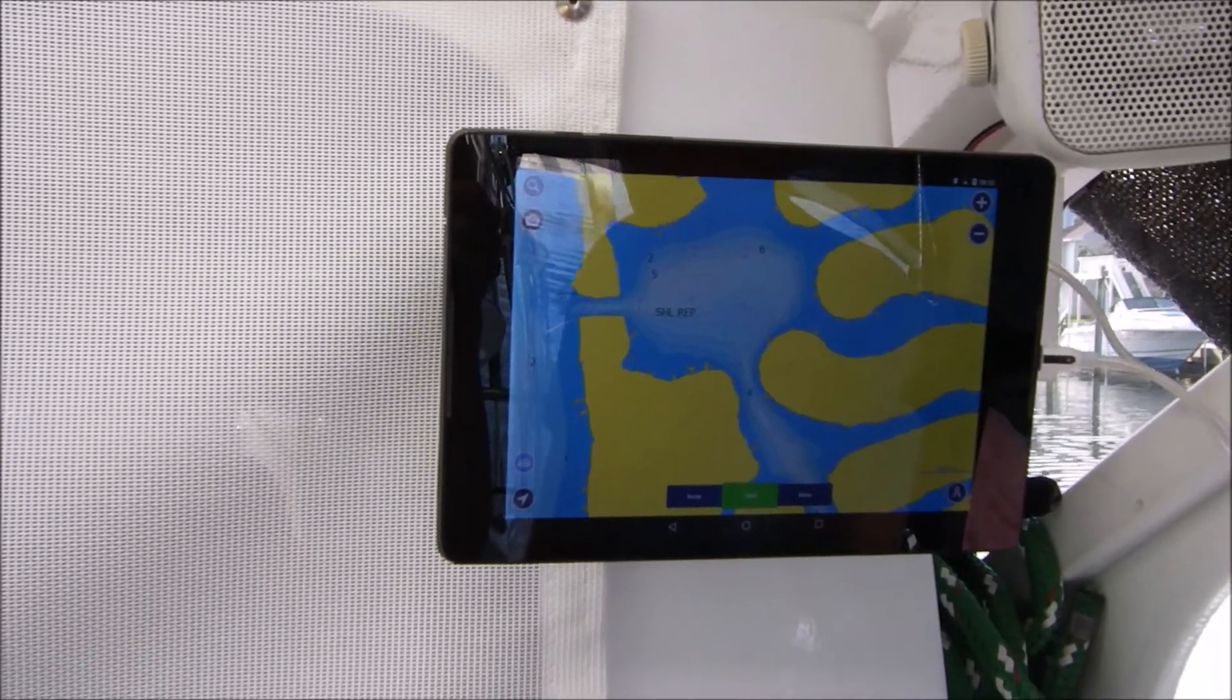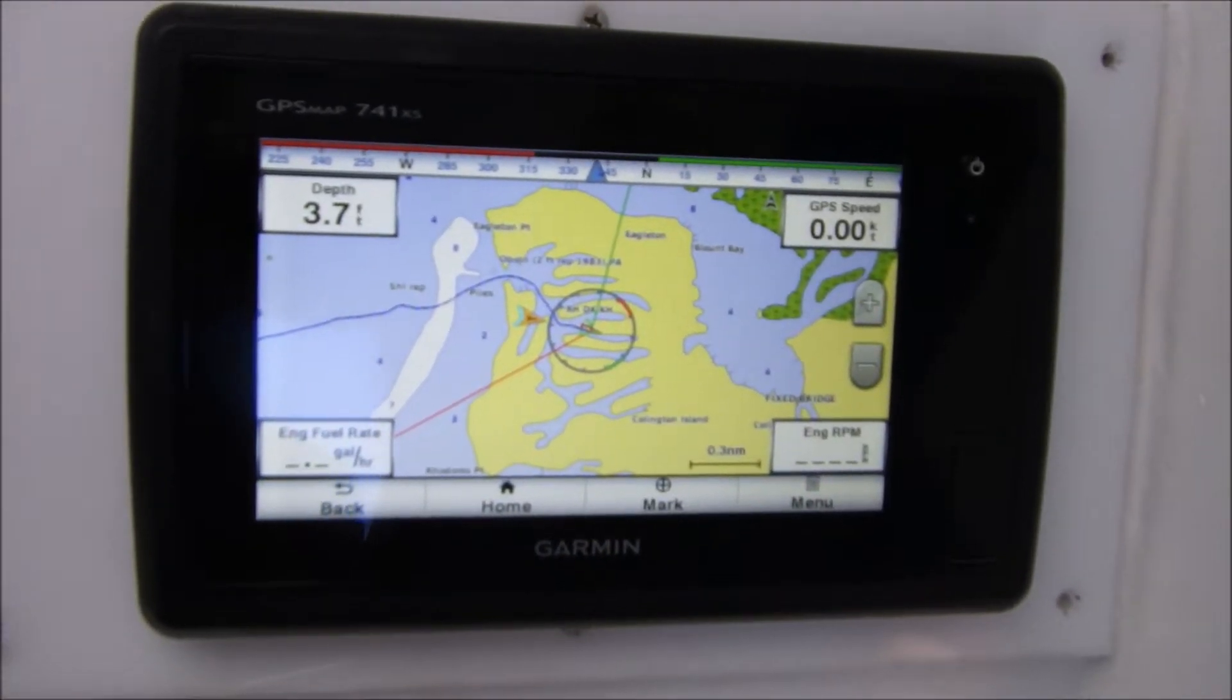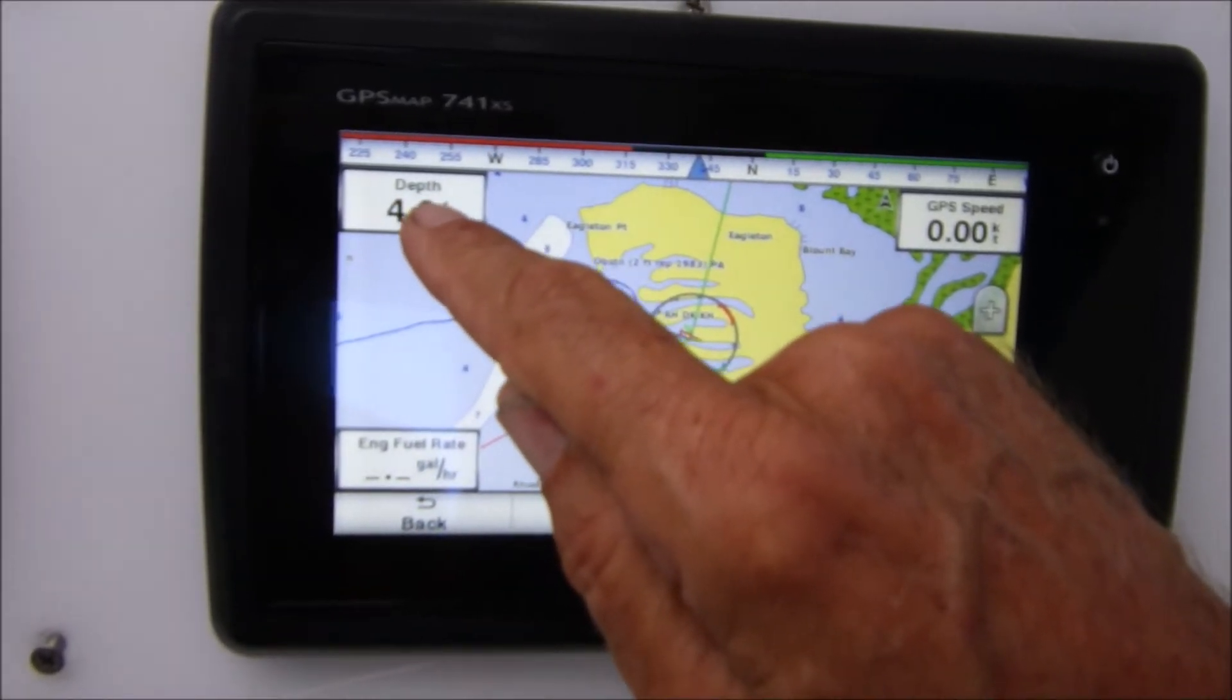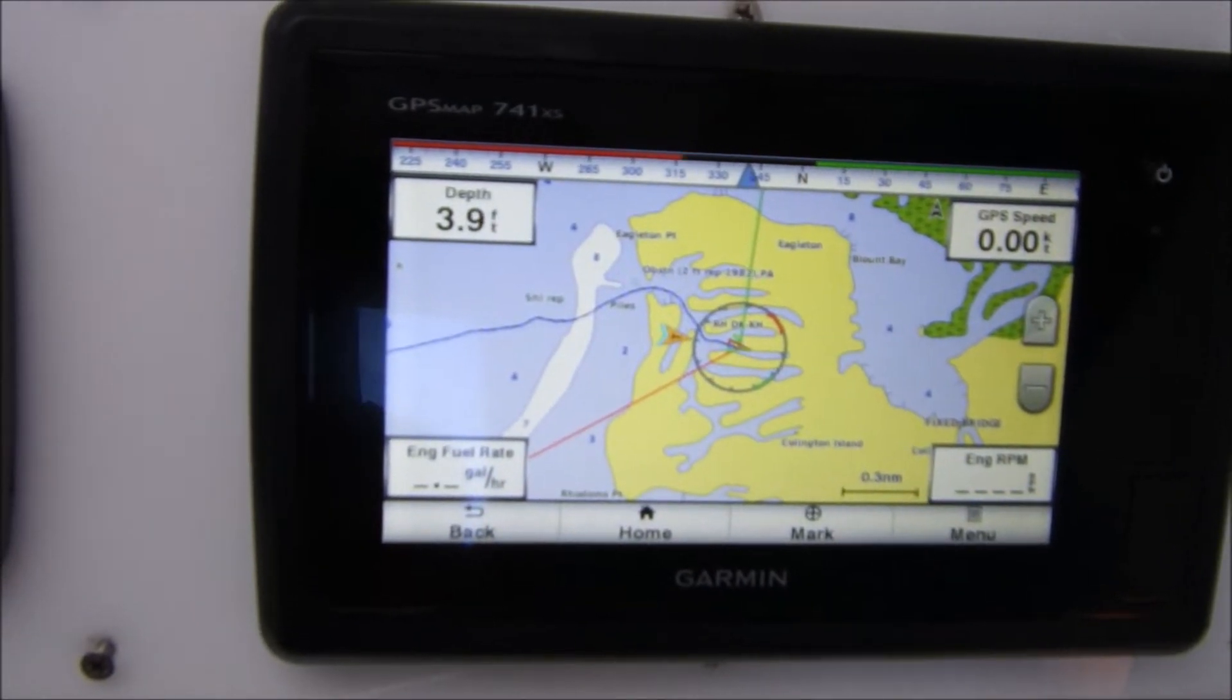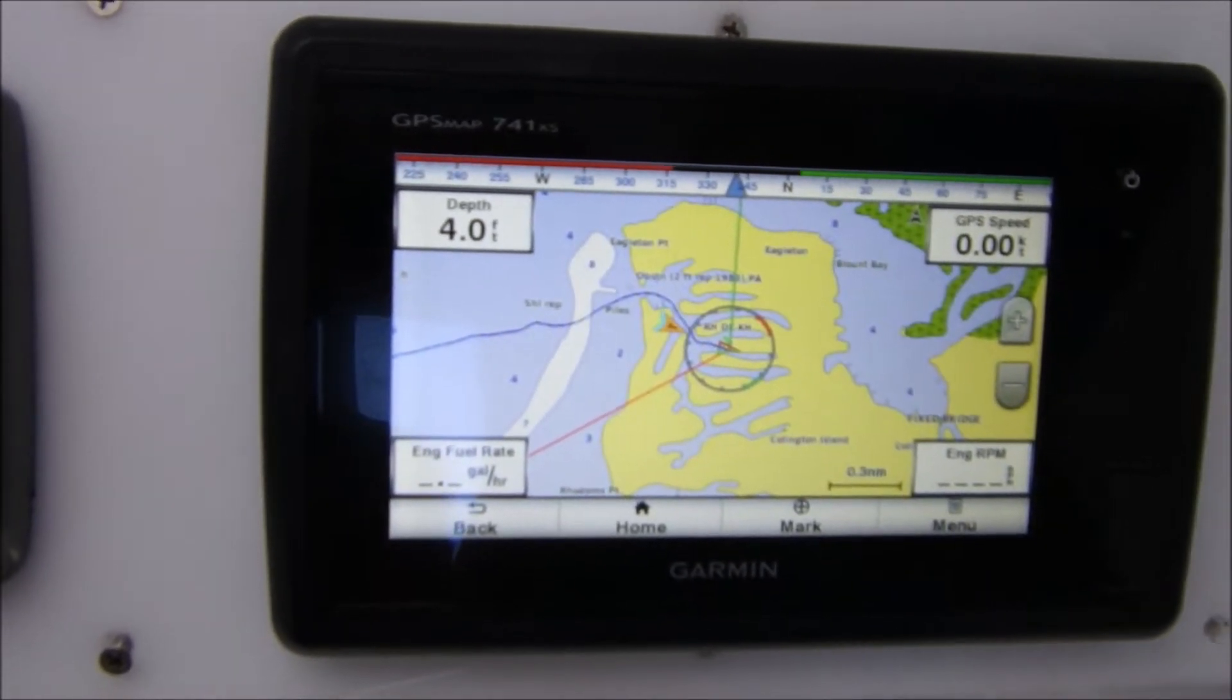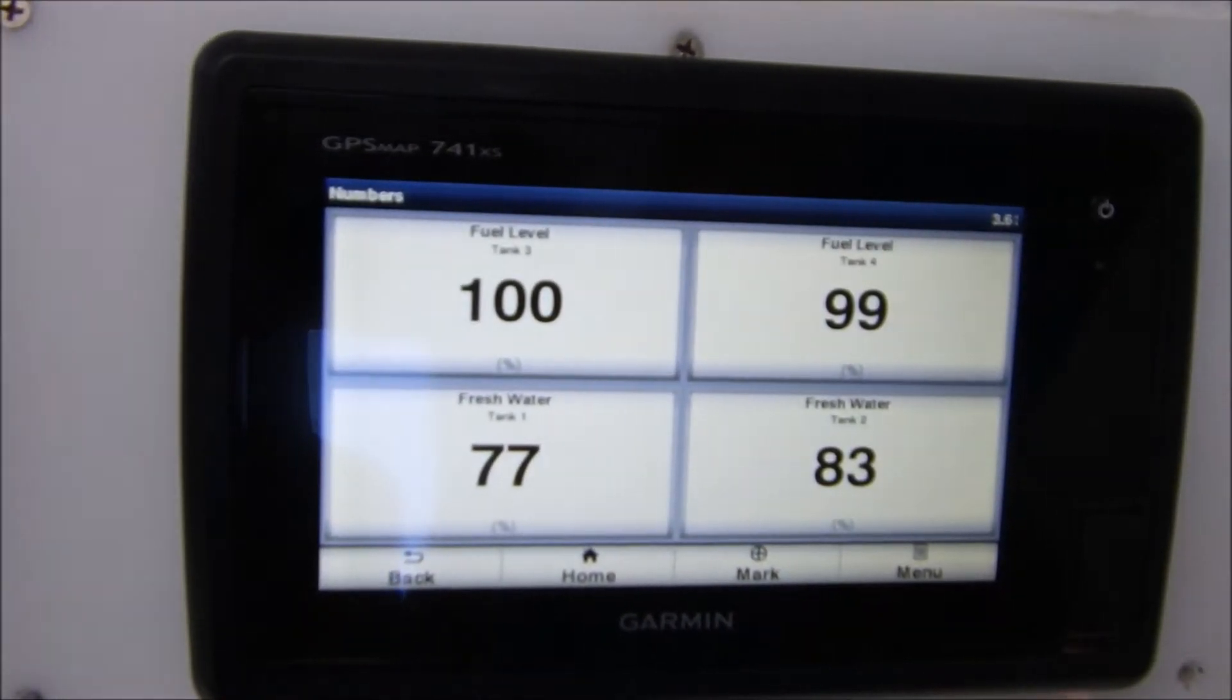The Garmin is a NEMA 2000 device and I have this set up to get information from a variety of different sources. It gets information from the engine, from the Raymarine and also from the AIS that I have set up with the standard Horizon GX2200. And also I have gauges here that will show me my tank levels.